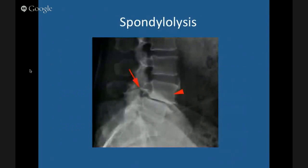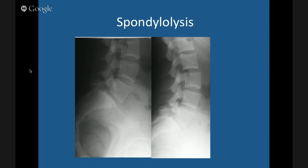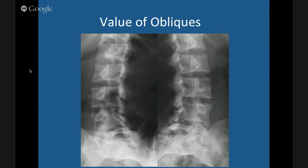Spondylolysis — pars defects — classically at L5, but can occur anywhere in the spine. The most sensitive film to look for a pars defect is a lateral film; the most specific is an oblique film. On the lateral film, you can see a line through the pars interarticularis — that's a pars defect, often with some listhesis of the vertebra above. If there's listhesis, it usually means bilateral pars defects. On the oblique films, look for a lucent line in the neck of the Scotty Dog — that's bilateral pars defects.